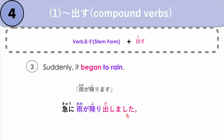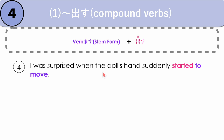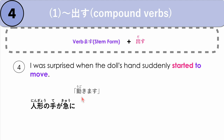Another example: I was surprised when the doll's hand suddenly started to move. Ningyou no te ga kyuu ni — the doll's hand suddenly — our verb is to move, which is ugokimasu. We get the stem ugoki, and then we add dashita. So suddenly started moving. When the doll's hand started to move, I was surprised: dashita toki, bikkuri shita. Ningyou no te ga kyuu ni ugoki dashita toki, bikkuri shita.